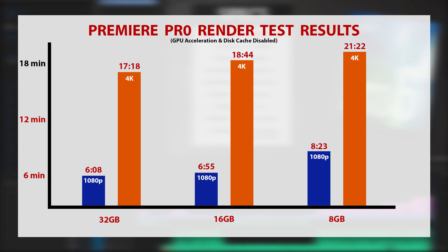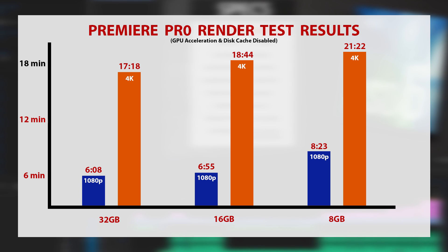Moving on to the Premiere Pro render test, the clip I used was not as demanding as the one we used for After Effects. It is a little longer though — 4 minutes and 40 seconds — and you will see that the times reflect the same results we got from the After Effects test, with 32 gigs coming out on top, not by as much. The difference between 16 and 8 gigs was not as large either in the Premiere Pro test for 4K or 1080p. Still, you're seeing really long times for 8 gigs of RAM, and decent, fairly close times for 16 and 32.